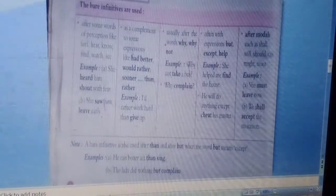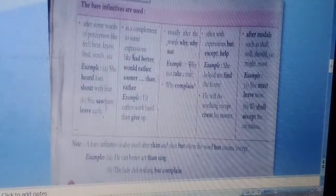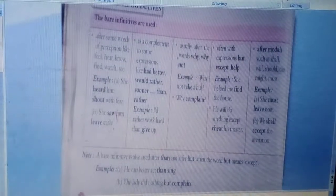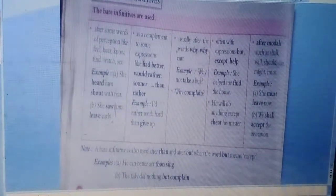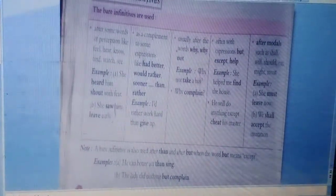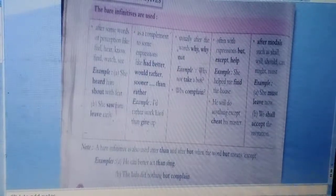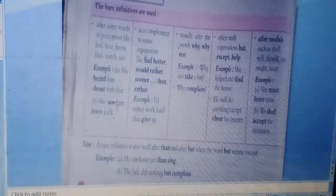Usually, after the words like why, why not. Often with expressions like but, except, help. And after modal auxiliaries such as shall, will, should, can, might, must. These all are the cases where we don't make use of to with the verb.